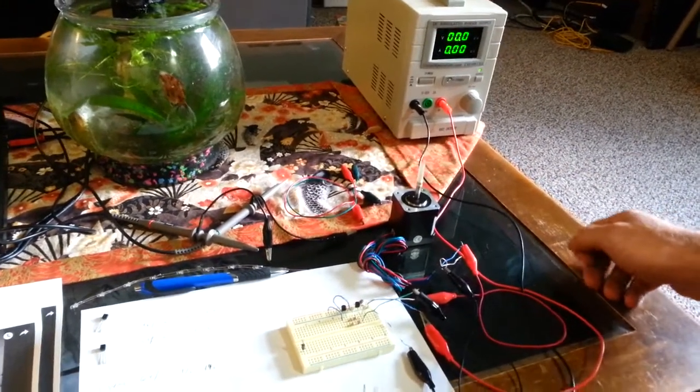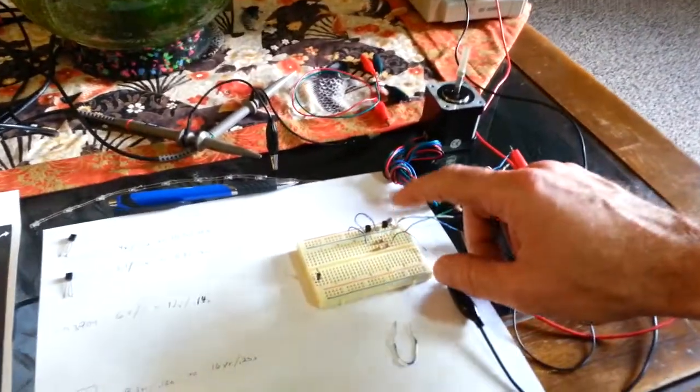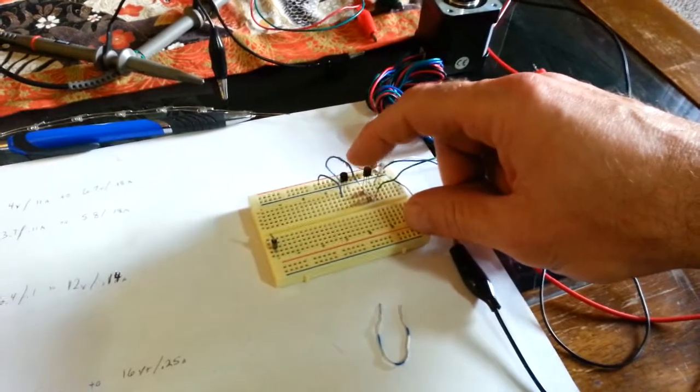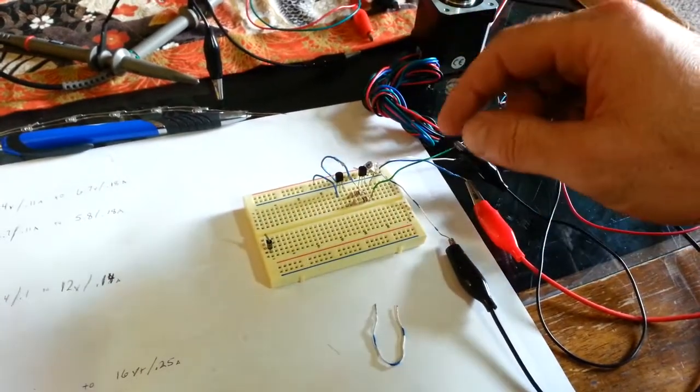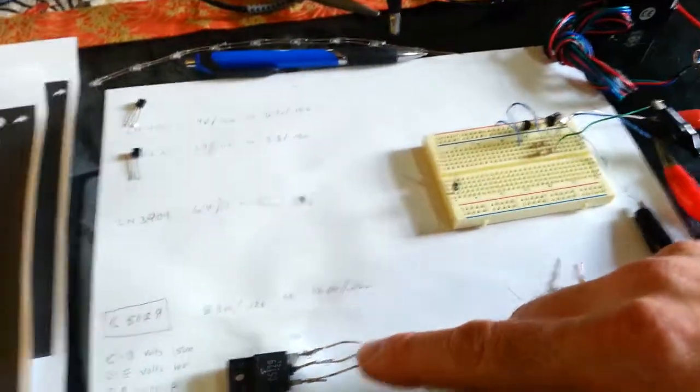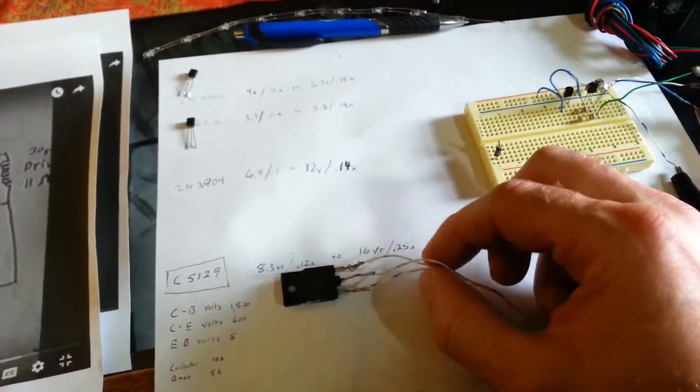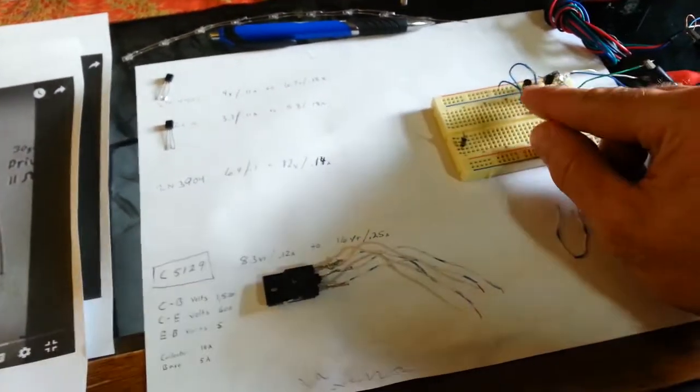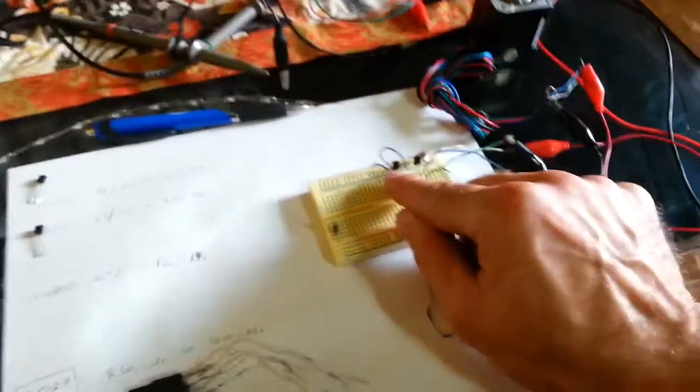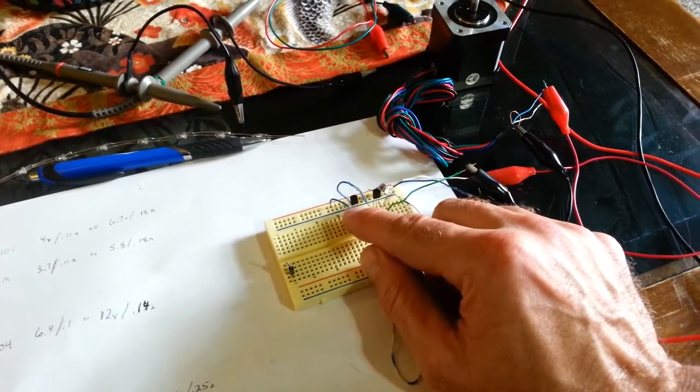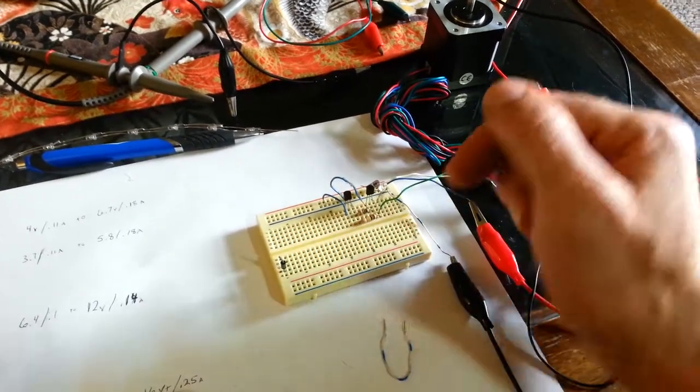When you're dealing with these smaller transistors, you have to be real careful because it doesn't take a whole lot of voltage before they start to get hot. I've actually learned that you can power much higher powered transistors with just a little bitty PNP transistor as the trigger.